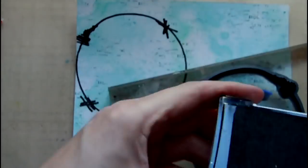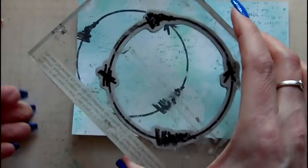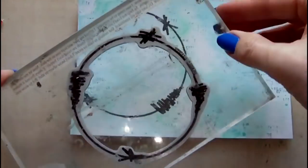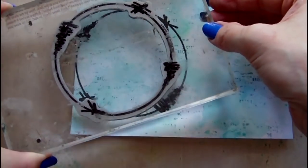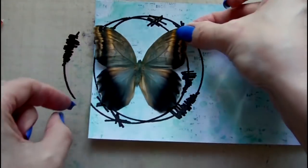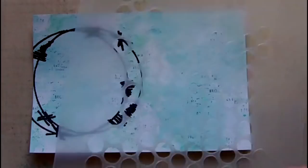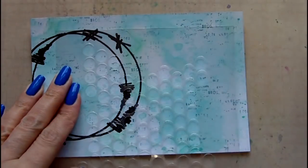I'm just using it for placement right now because before I attach the butterfly, I'm going to add more background elements using a stencil of circles. I'm using gesso to sponge this onto my piece.